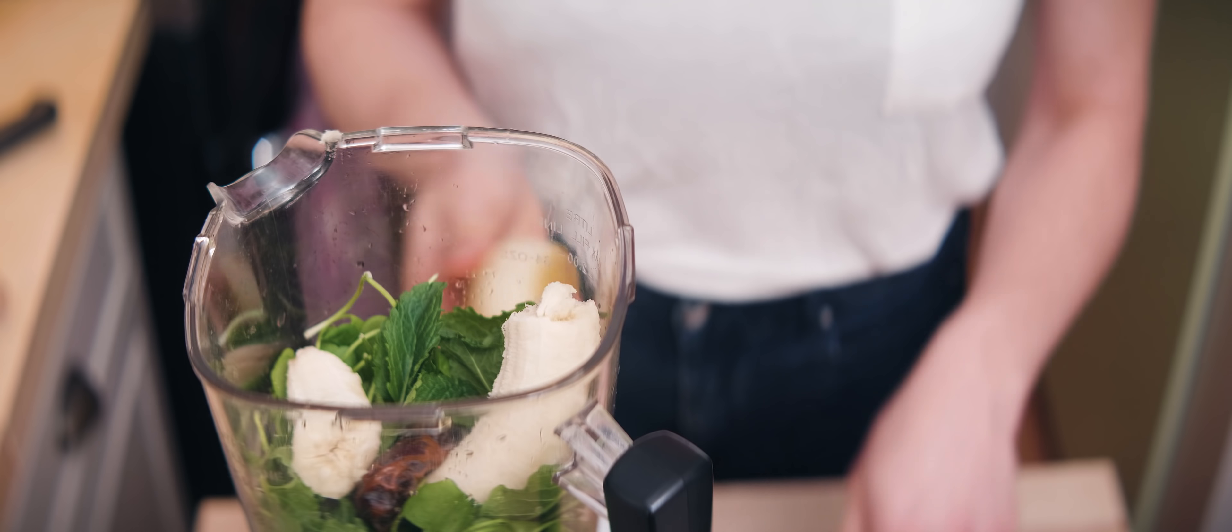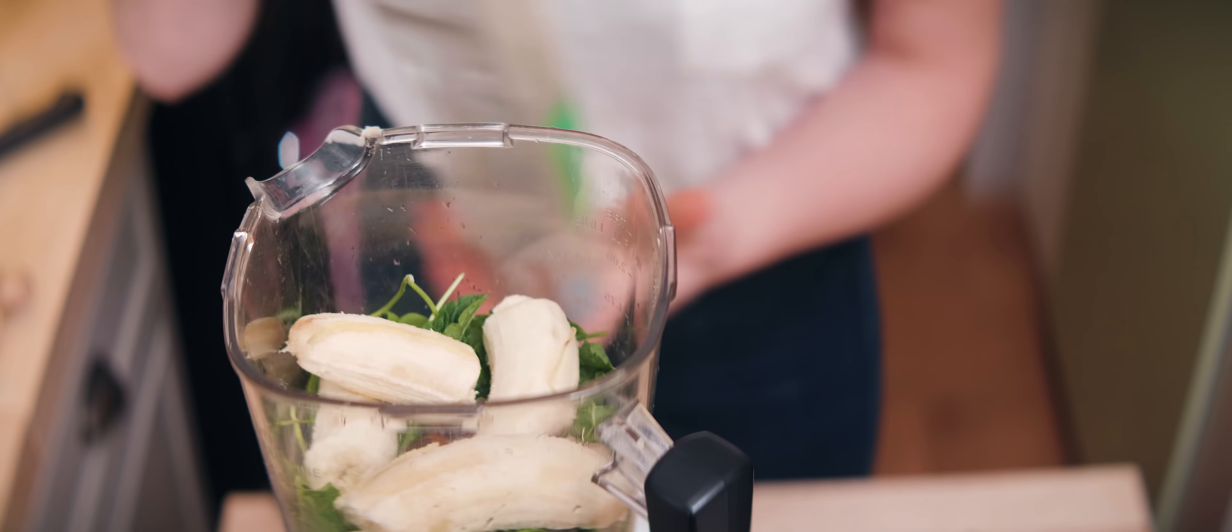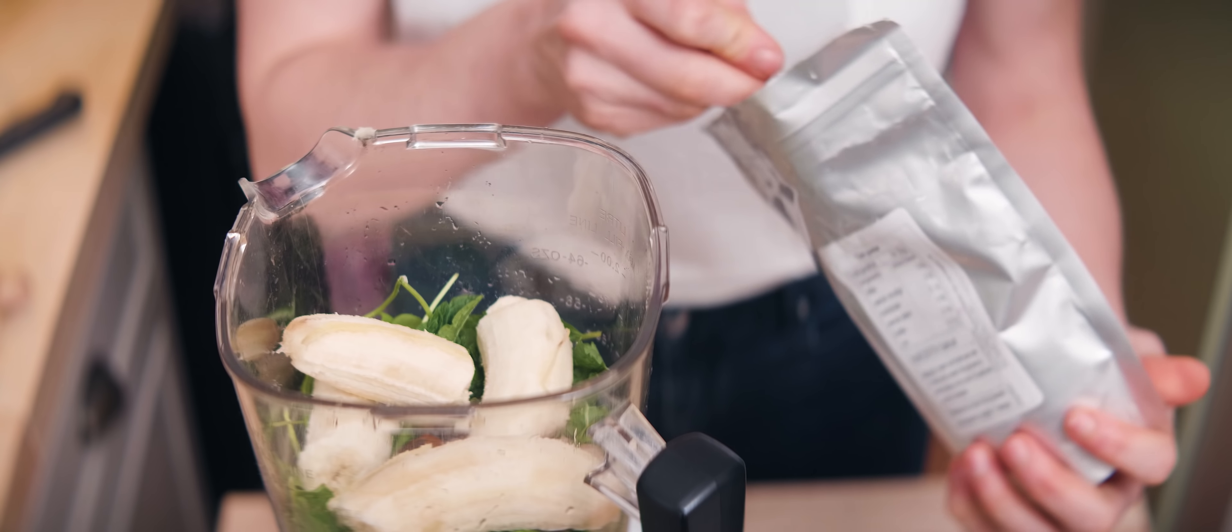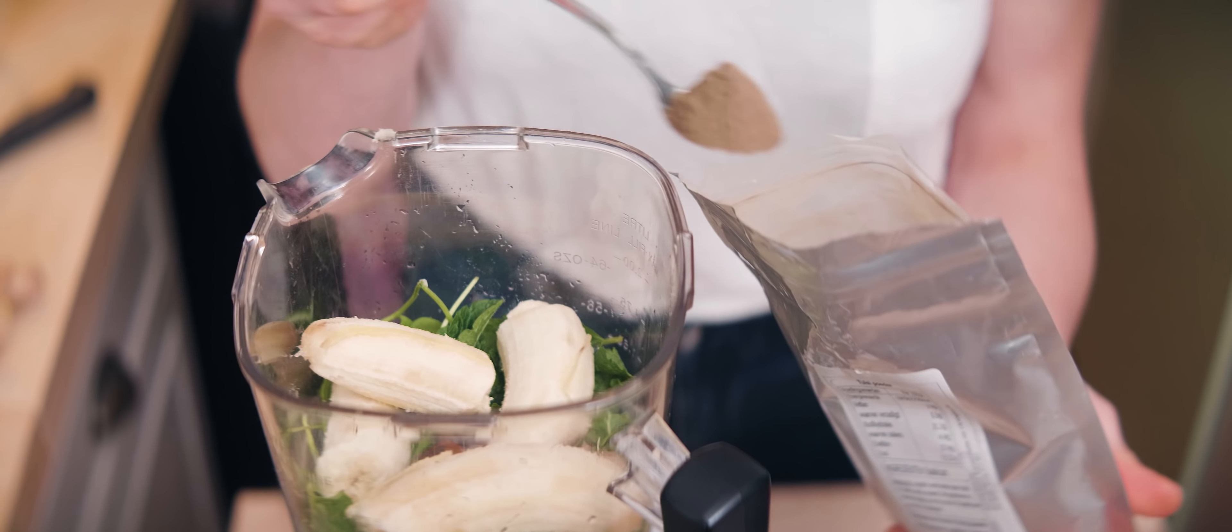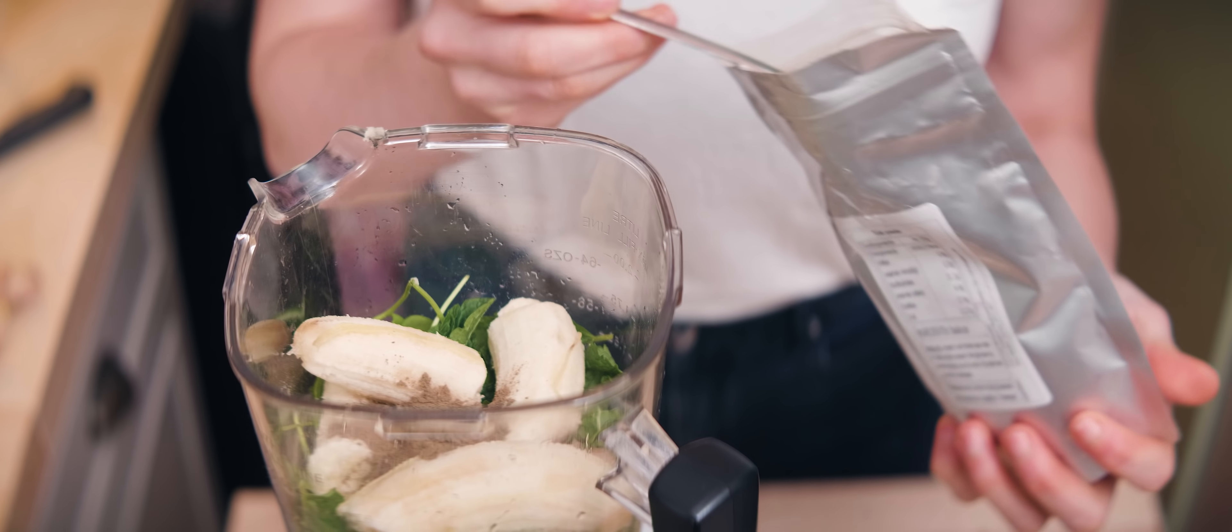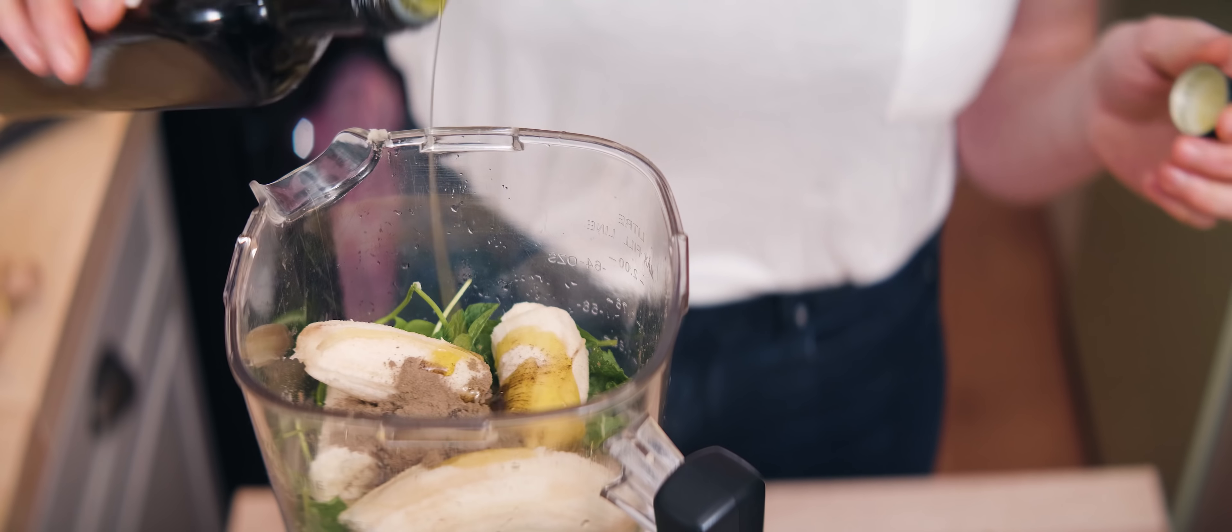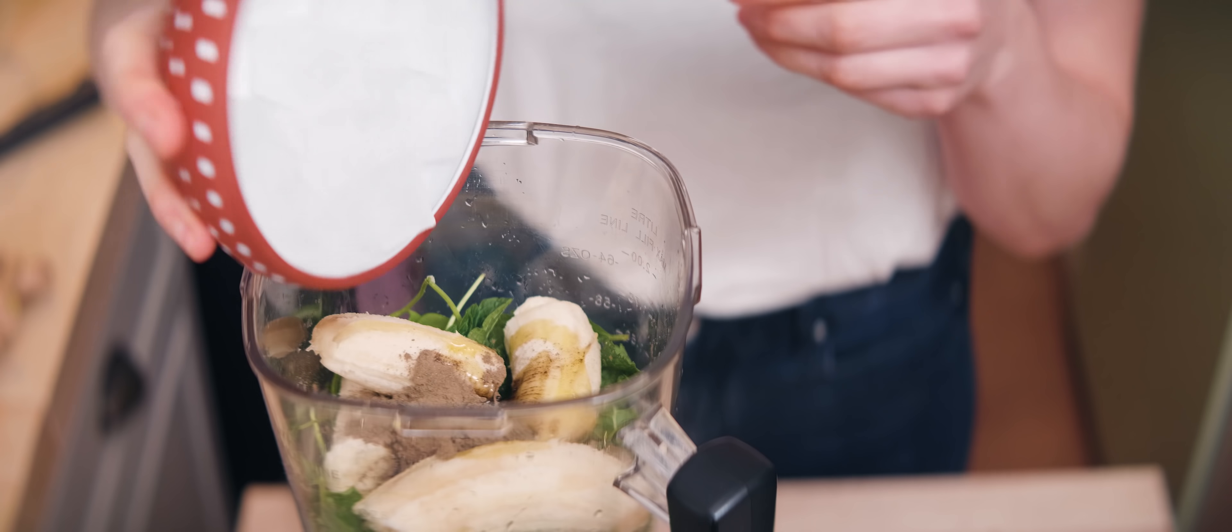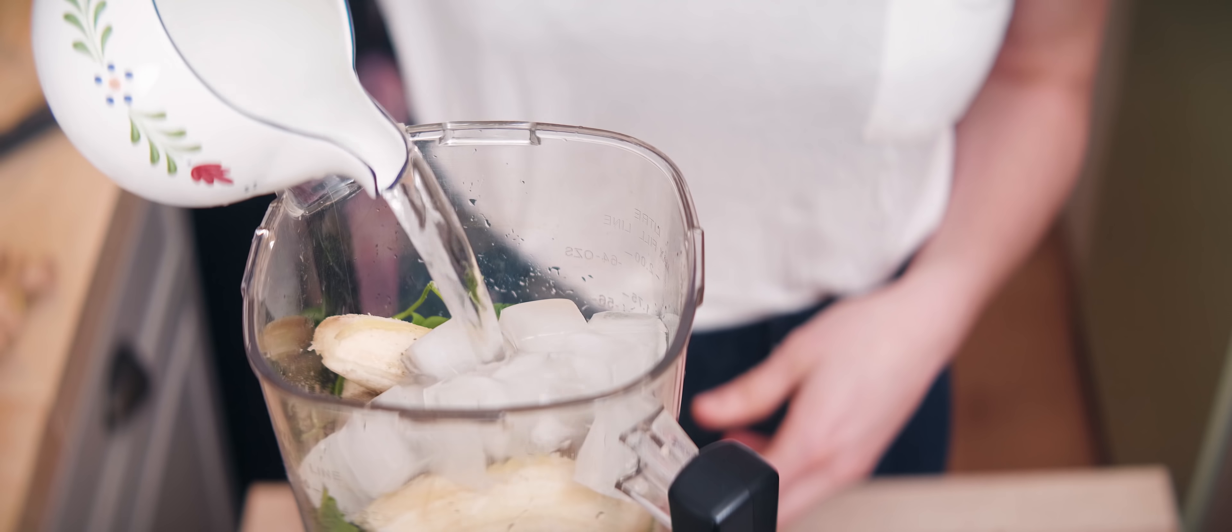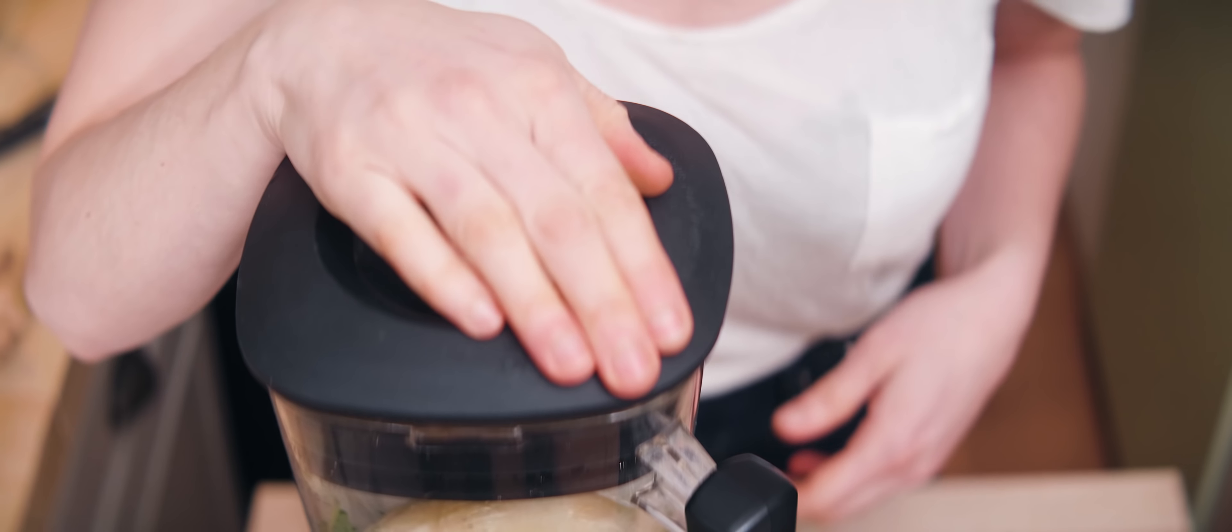Then this ingredient is optional but I like to use some green powder, and this is Tulsi powder which is the same as holy basil. Then again some flaxseed oil, ice cubes, and about a cup of water. If you have frozen bananas you can use that.